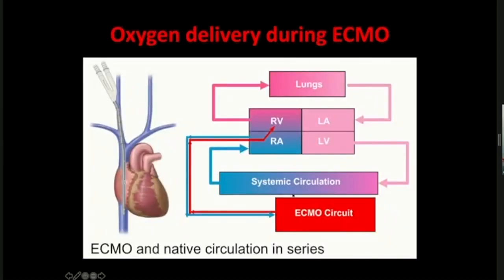The ECMO circuit does not work alone — it is configured in series with the lung. A portion of the systemic circulation is drawn out, goes through the ECMO circuit, then is returned to the right ventricle and mixes with the remaining circulation that does not pass through ECMO. All of this passes through the lung and returns to the left heart circulation. This means total oxygen delivery depends on both the ECMO circuit and the lung. In the initial phase, the lung contribution is very minute because the lung is in severe failure. As the lung recovers, there will be more contribution, the ECMO circuit can be weaned, and eventually the lung takes over and ECMO is removed.